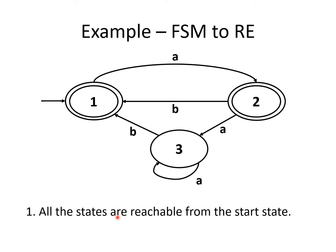In step 1, we have to remove all unreachable states from the start state. In this machine, both state 2 and state 3 are reachable from state 1, which is the start state. From start state 1, transition A reaches state 2, so state 2 is reachable. Similarly, from 1, A then A reaches state 3, so state 3 is also reachable from the start state.